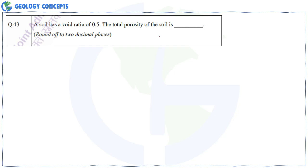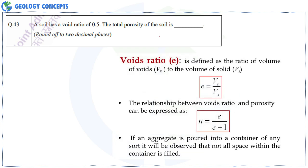Question 43: A soil has a void ratio of 0.5. The total porosity of the soil is? The void ratio is the volume of voids to the volume of solids, and porosity = void ratio / (void ratio + 1) = 0.5 / (0.5 + 1) = 0.5 / 1.5 = 0.33. Write this value, not as a percentage.